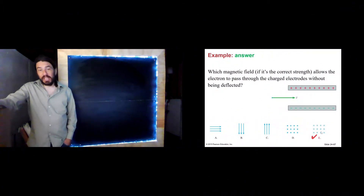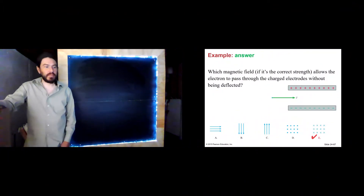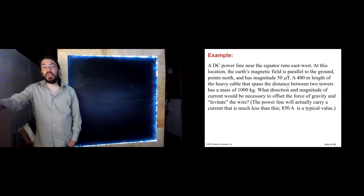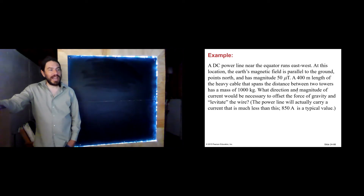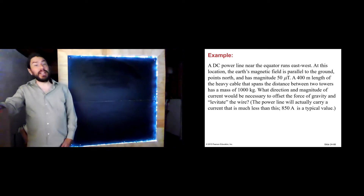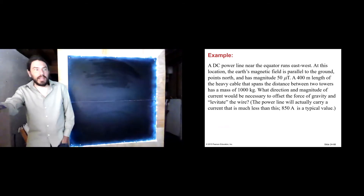Choice E is into the page, so PowerPoint agrees. Let's do a numerical example. A DC power line near the equator runs east-west. At this location, the Earth's magnetic field is parallel to the ground, points north, and has a magnitude of 50 microtesla. A 400-meter length of heavy cable spanning the distance between two towers has a mass of 1,000 kilograms. What direction and magnitude of current would be necessary to offset the force of gravity and levitate the wire? We'll see we get an answer that's not terribly realistic, but let's do the math.